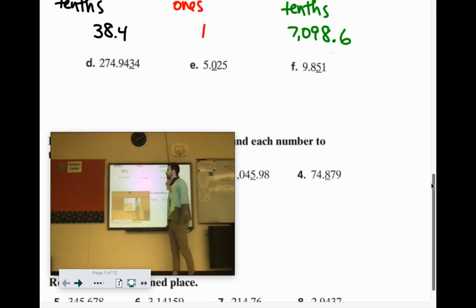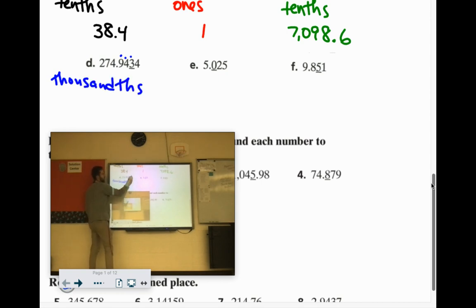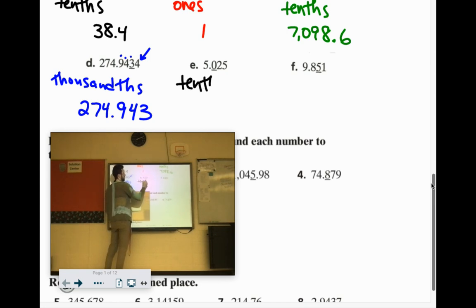274.943. So it goes tens, hundreds, thousands. And we're going to keep it as a 3 because behind it is a 4. So 274.943. 5.025. That's the tenths column. And we're going to keep it at 5.0 because there's a 2 behind it.